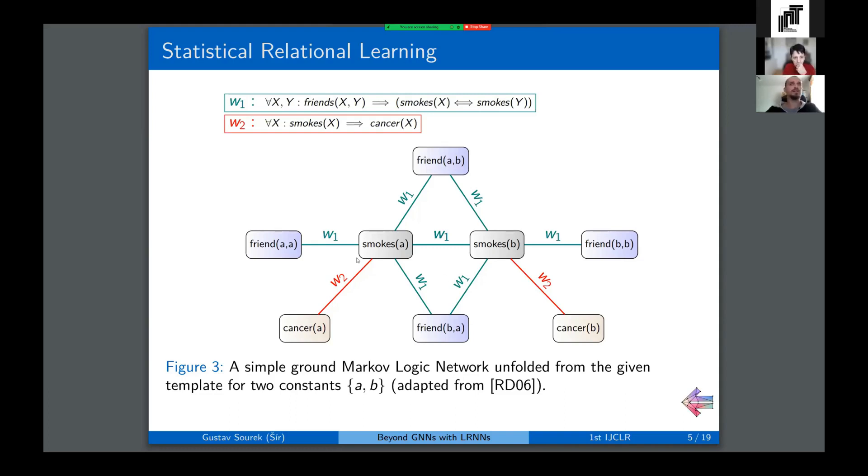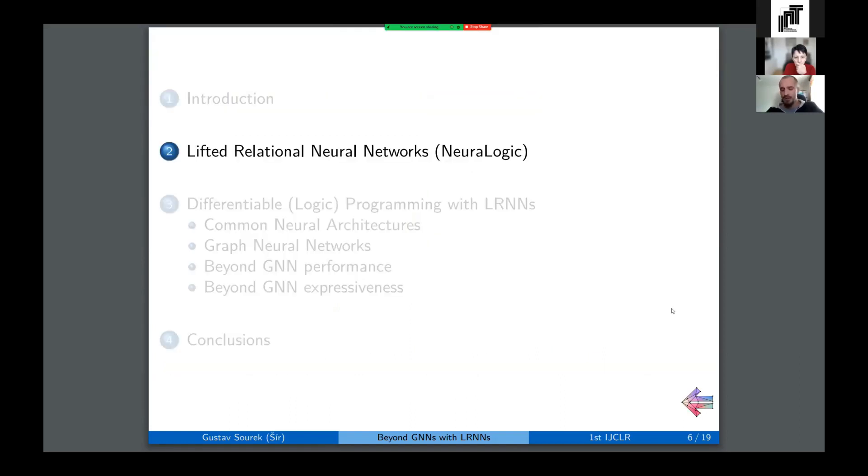To put this into some context, we've been inspired by these so-called lifted graphical models, which use the expressive language of logic extended with numeric parameters to serve as templates for unfolding ground or standard graphical models, such as in this super popular example of Markov logic network template about smokers being unfolded into this standard ground Markov network. The interesting thing to note about the ground network here is the use of shared weights as induced by the use of the clauses in the template and the symmetries in the model. And then we take this lifting idea and bring it into deep learning to make neural networks learn with these relational representations.